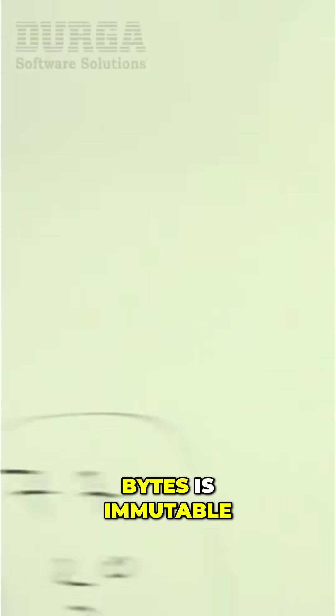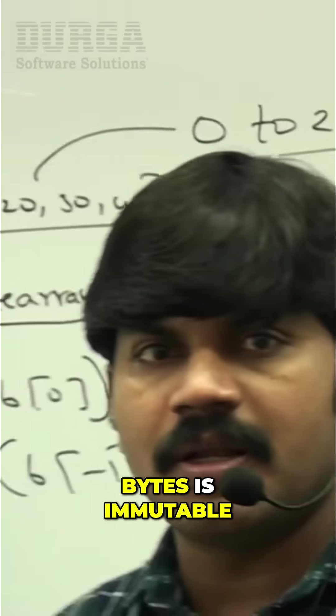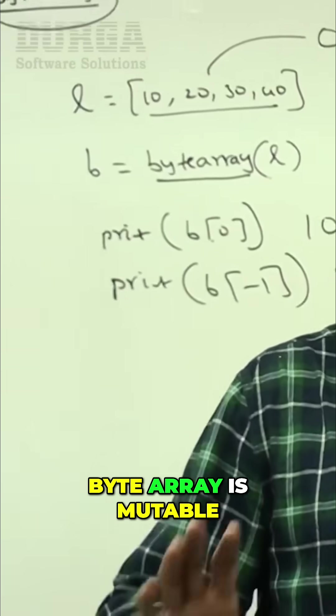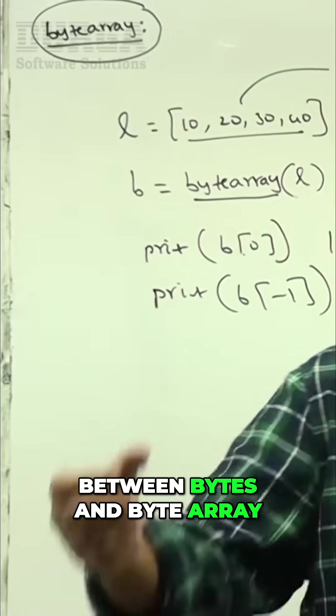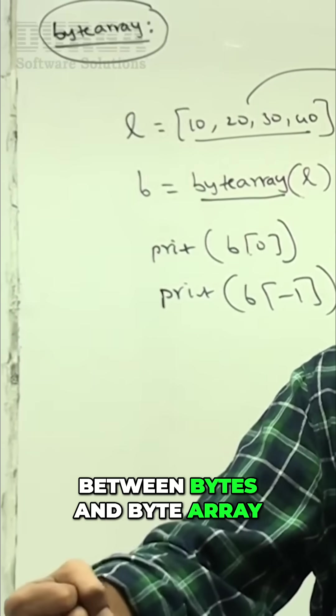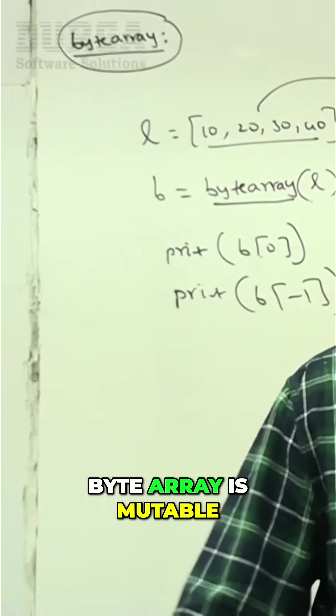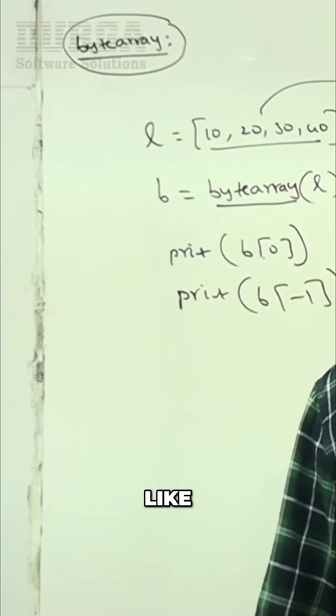Can you spell out: bytes is immutable, byte array is mutable? Maybe a chance to ask in the interview room - what is the difference between bytes and byte array? Bytes is immutable, byte array is mutable.